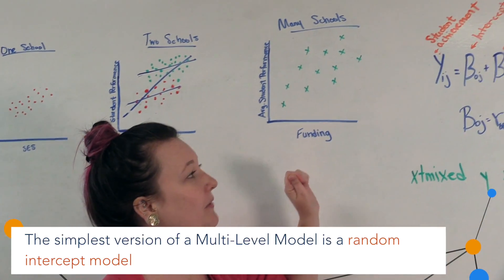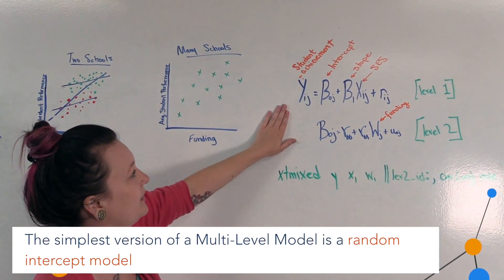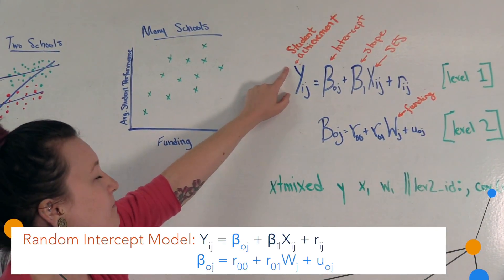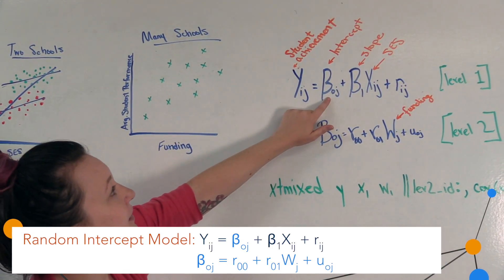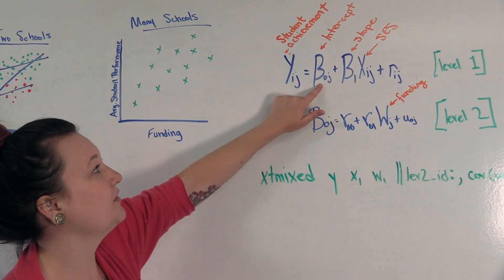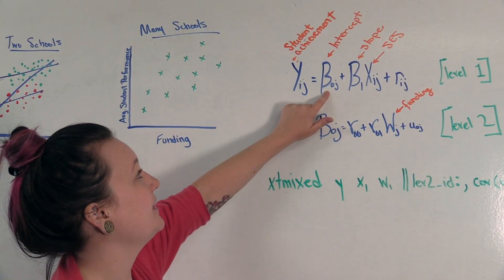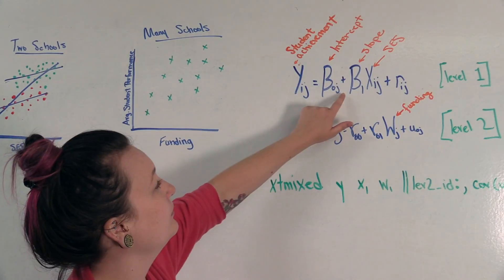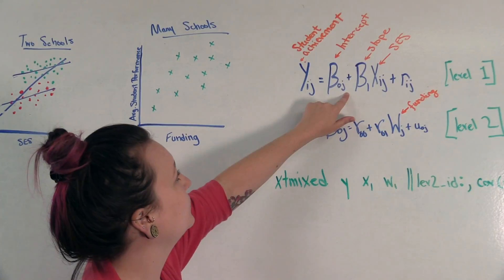The simplest version of a multi-level model is going to be a random intercept model represented here. So here we have the dependent variable, which in this case is going to be student achievement for student i in school j. Here we have the intercept. With a random intercept model, we're going to be estimating an intercept for each level two unit. In this case, it would be for each school. That's represented with beta of j, the subscript j, again indicating that it's a level two unit, in this case schools.